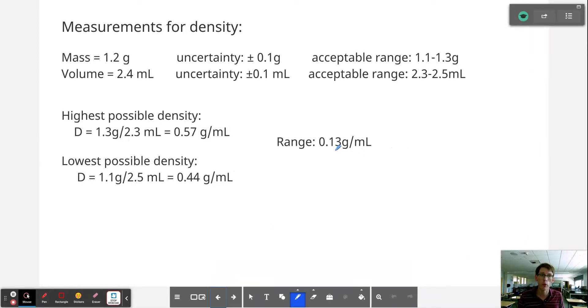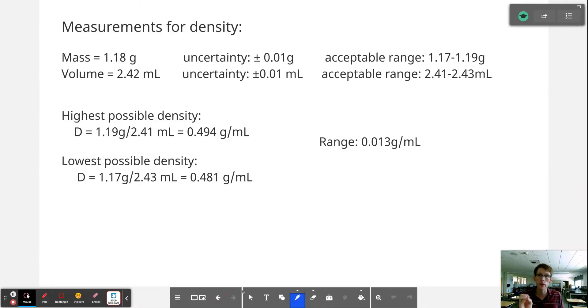Again, we had 0.13 grams per milliliter in the previous case, but when we use something that is ten times more precise that measures to the hundredth instead of the tenth, then we're going to have significantly more precision, and our range is going to be ten times less than it was in the other case.